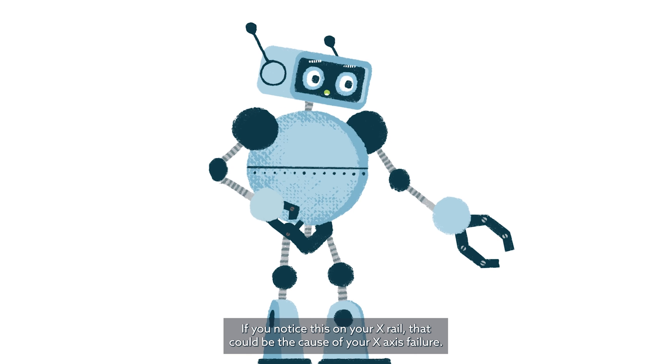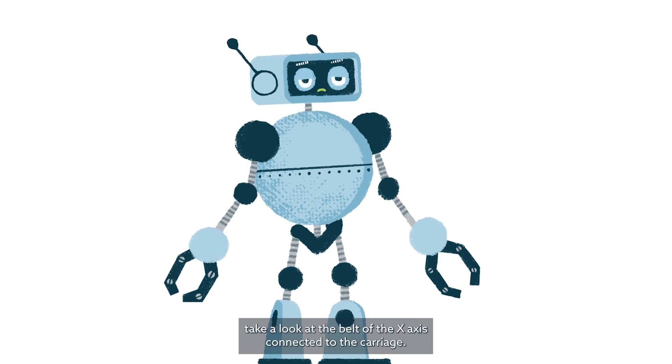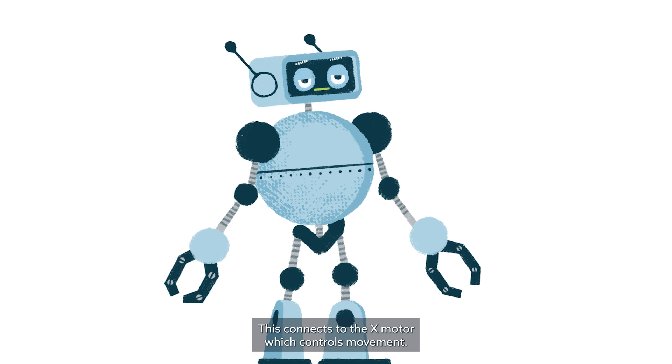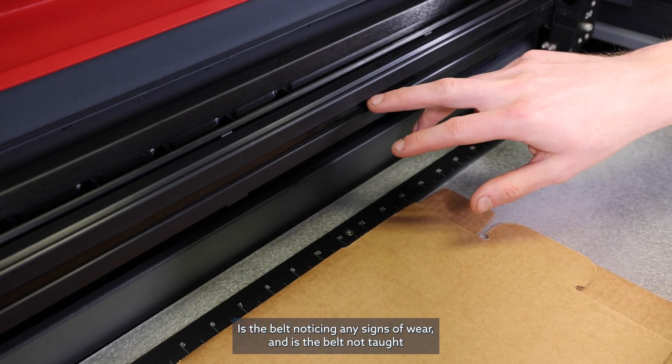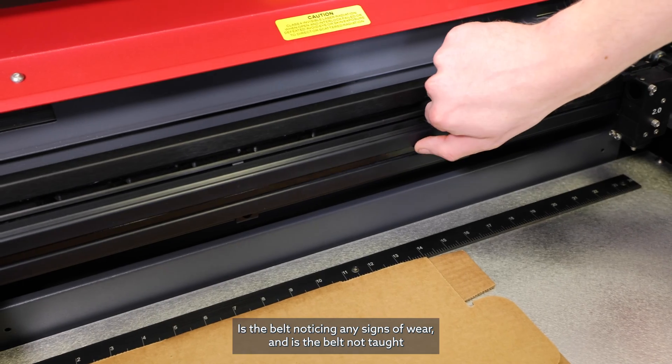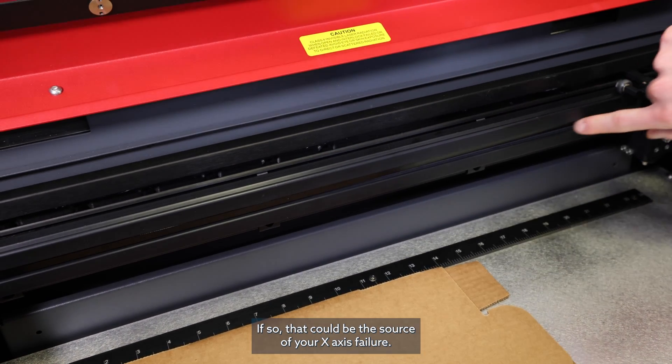Finally, take a look at the belt of your x-axis connected to the carriage. This connects to the x-motor which controls movement. Has the belt noticed any signs of wear, and is the belt not taut with the carriage system? If so, that could be the source of your x-axis failure.